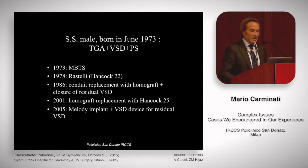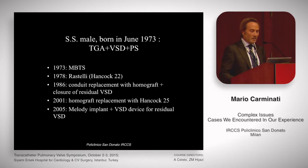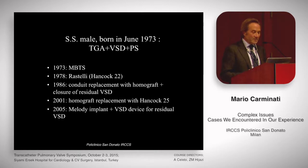This is the first case. A patient with complex transposition born in 1973, very complex history. Modified BT shunt at the beginning, then a Rastelli, with an Hancock conduit 22 millimeters in 1978. Then in 1986 he underwent conduit replacement with homograft and closure of residual VSD. Then another operation in 2001, homograft replacement with a Hancock 25 millimeters. And eventually in 2005, he underwent Melody implant and VSD device implantation for residual VSD.